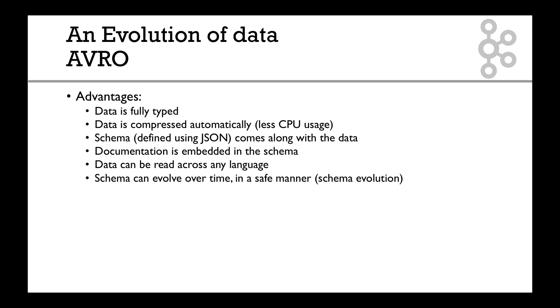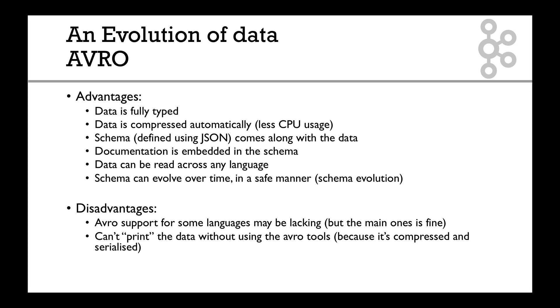A few disadvantages though: some languages may have some trouble supporting Avro, and then you can't really see or print the Avro data without using the Avro tools. That's because it's compressed and serialized. A JSON document you just double click and there you go, you read it. But for Avro you can't just double click and read it - you need to use some tools to read it.